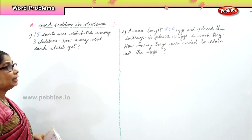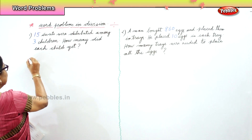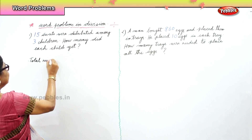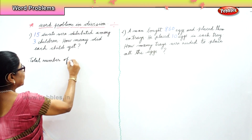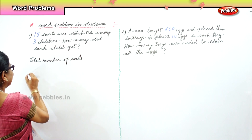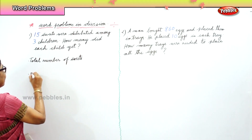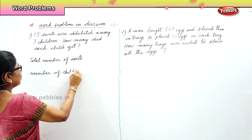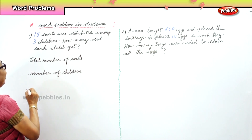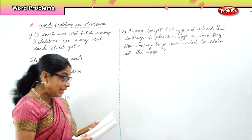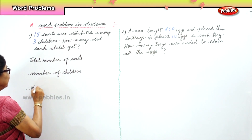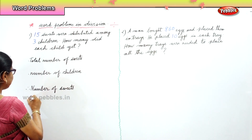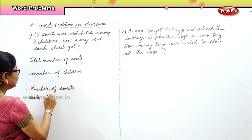So what's the first statement that we are going to write? Total number of sweets. The second statement is: number of children. And what will be the final statement? Therefore, number of sweets each child gets.